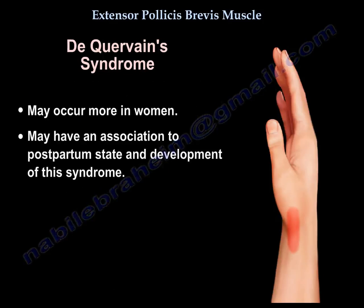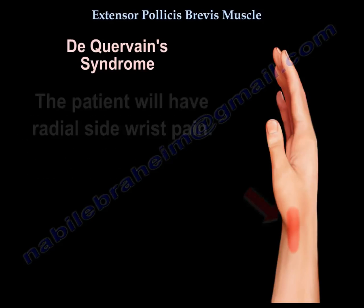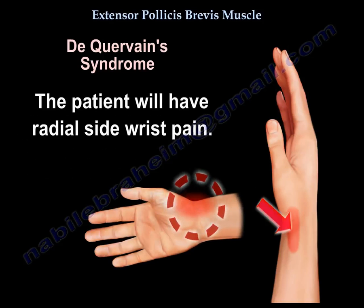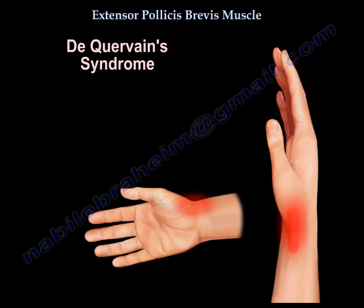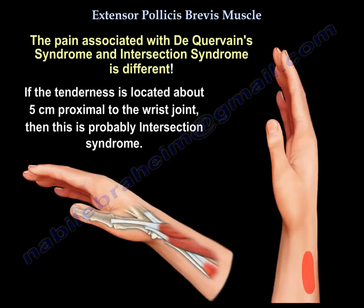De Quervain's syndrome occurs more in women, and there is an association between the postpartum state and the development of that syndrome. The condition is usually diagnosed by radial-sided wrist pain, and the tenderness would be over the first dorsal compartment at the level of the radial styloid — not five centimeters proximal to the wrist joint, as that occurs in intersection syndrome.